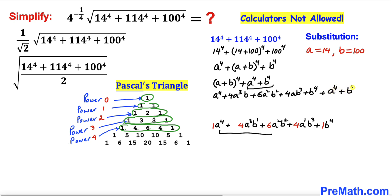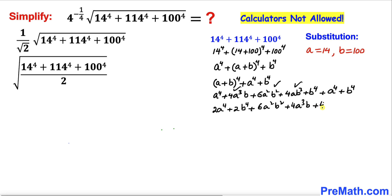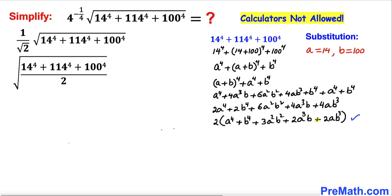Combining like terms: the two a to the power 4 terms combine to give 2a⁴, and the two b to the power 4 terms give 2b⁴, plus 6a²b² plus 4a³b plus 4ab³. We can see that 2 is a common factor across the board, so I bring 2 outside as a factor.